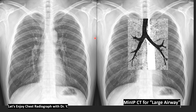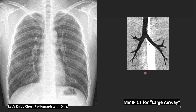We need imagination and knowledge of these large airway structures to identify the large airways in the chest radiograph. Here is the trachea, right main bronchus, right upper and lower bronchus, bronchus intermedius, middle lobe bronchus, lower bronchus, left main bronchus, upper and lower bronchus, lingular segments, and lower bronchus. Now you can see the large airways. I will now remove the background chest radiograph.